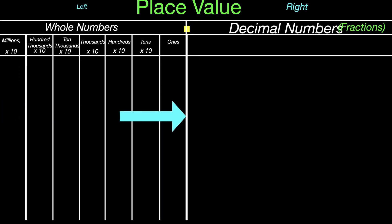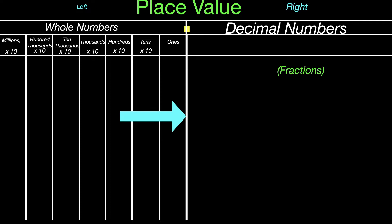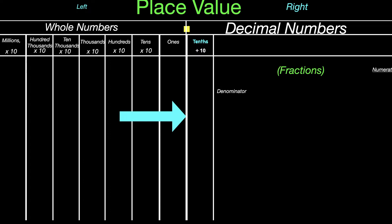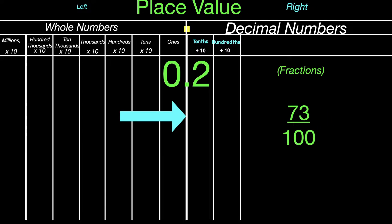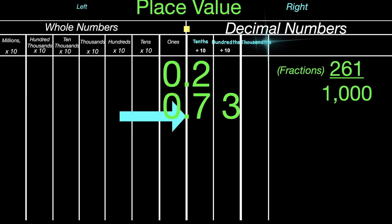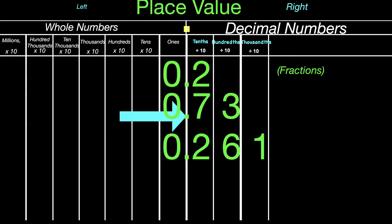With decimal numbers on the right side, remember they're just fractions with denominators of ten, one hundred, or one thousand. Our first decimal place value is tenths — instead of multiplying by ten, we're dividing by ten. So if you had the fraction two tenths, we would write that as 0.2. Seventy-three hundredths would be our next decimal place value, shown as 0.73. Our thousandths is next — two hundred and sixty-one thousandths in decimal form would be shown as 0.261.